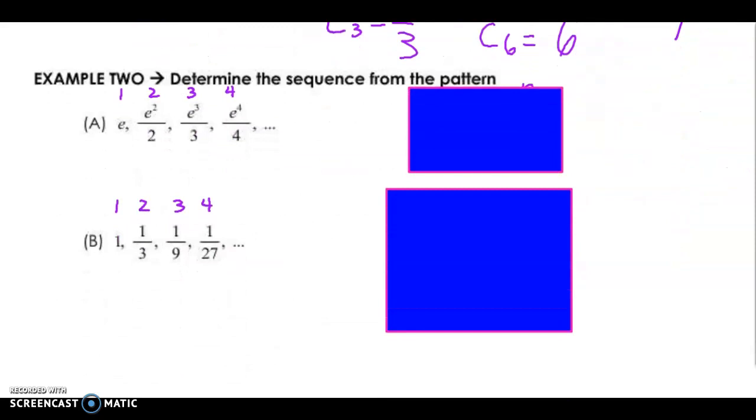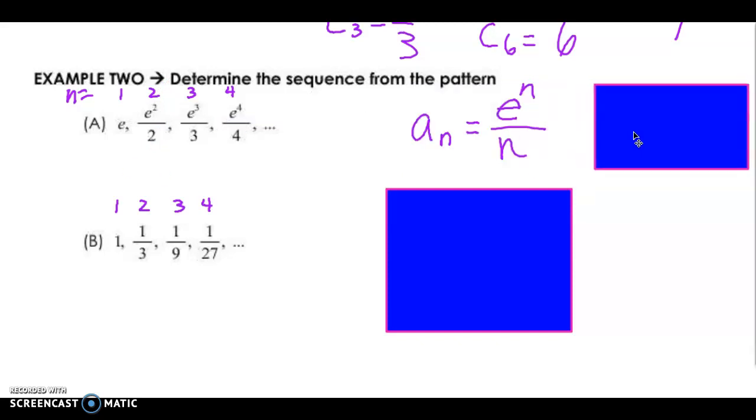For example 2, I think this is probably the hardest type of problem in this section, determining the sequence from the pattern. If you take a look at what the values for n are, n equals, in the first term it's 1, second term it's 2, 3, and 4. You have to look for a pattern. Well, for this one, this one's pretty simple. You can see that the exponent is n for this e, and the denominator is also an n. So the way we write that is a sub n equals e to the n over n.